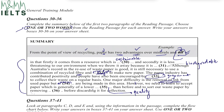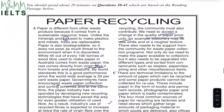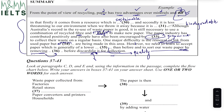Question 36 says: and to sort our waste paper by removing dash before discarding it for collection. We're looking for what needs to be removed. The paragraph says: there also needs to be support from the community for waste paper collection programs. Not only do we need to make the paper available to collectors, but it also needs to be separated into different types and sorted from contaminants, such as staples, paper clips, string, and other miscellaneous items. So the answer for number 36 is 'contaminants.'